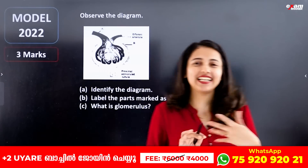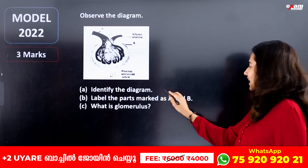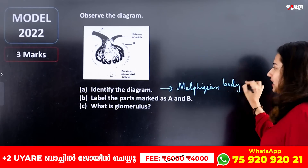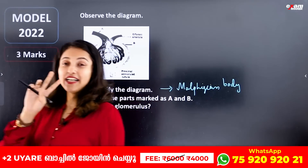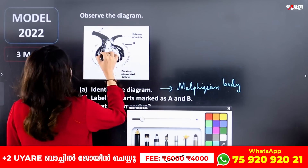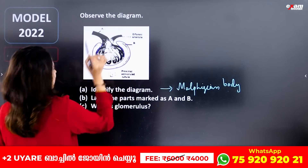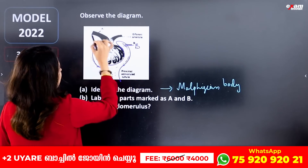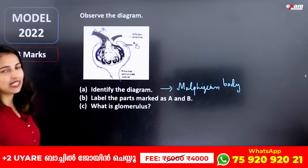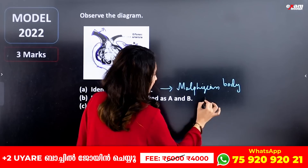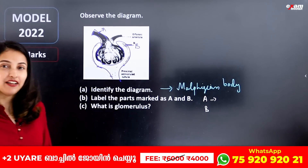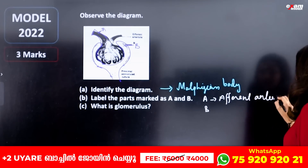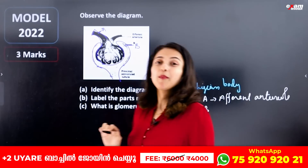The next question: observe the diagram. This is the Malpighian Body. Label the parts A and B. Part A is what we call the Efferent Arteriole in the nephron. Part B is the cup-like structure called Bowman's Capsule.